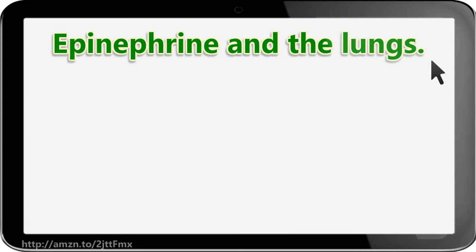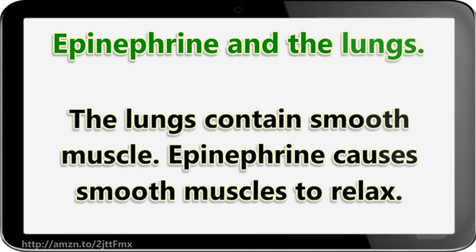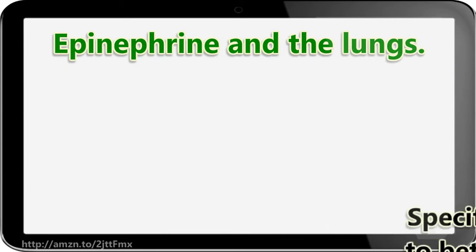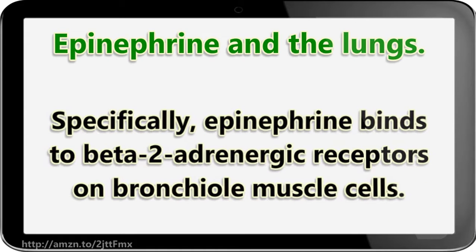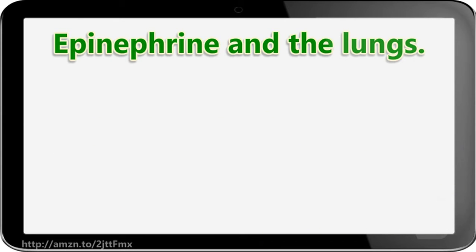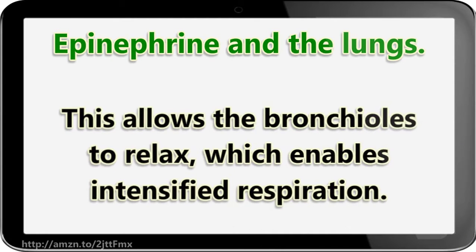Epinephrine in the lungs. The lungs contain smooth muscle, and epinephrine causes smooth muscles to relax. Specifically, epinephrine binds to beta-2-adrenergic receptors on bronchiole muscle cells. This allows the bronchioles to relax, which enables intensified respiration.